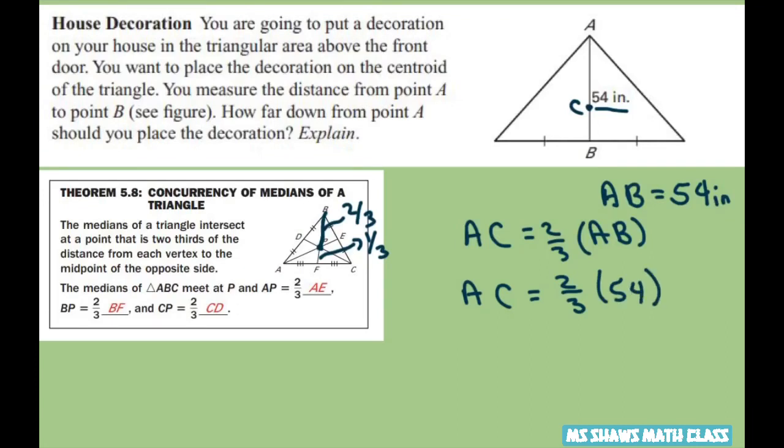So AC equals two-thirds of 54. Now 3 goes into 54, 18 times. So 2 times 18 is 36 inches. This part here would be 36 inches.